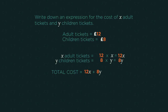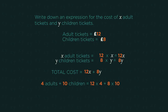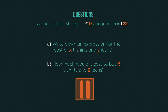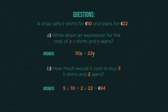A group of four adults and 10 children would cost £128. Here's one for you to do — pause the video and give it a go. How did you get on?